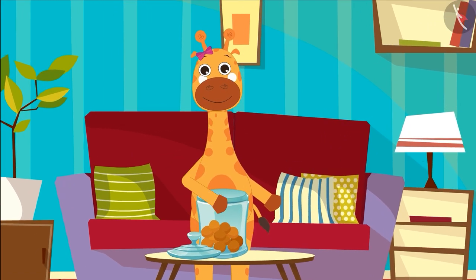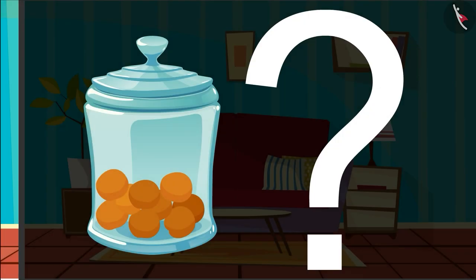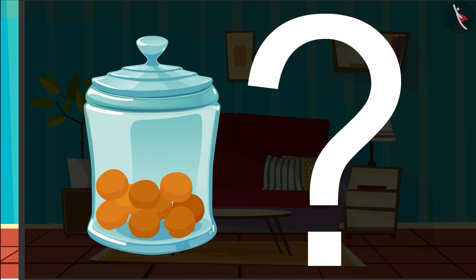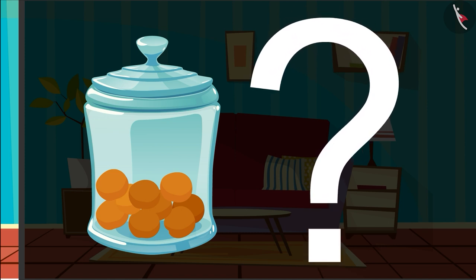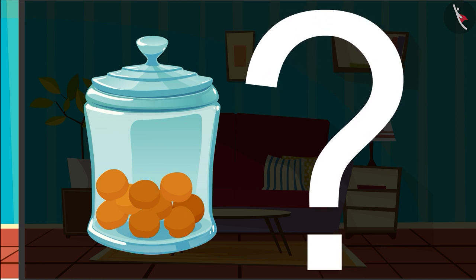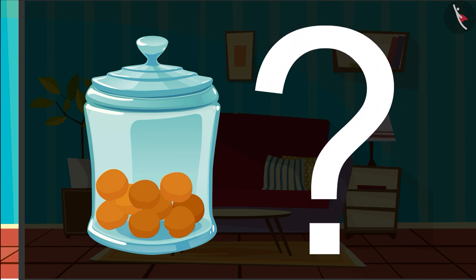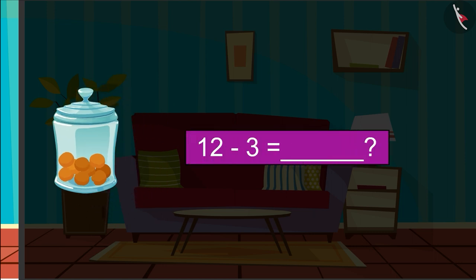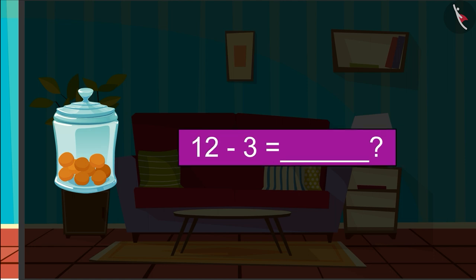Gaffey ate three lumps of jaggery. How many jaggery lumps are left in the jar? Children, here we have to find out the remaining jaggery lumps. We can find the answer using subtraction. First, we will write subtraction in horizontal form like this: 12 minus 3 is equal to what?